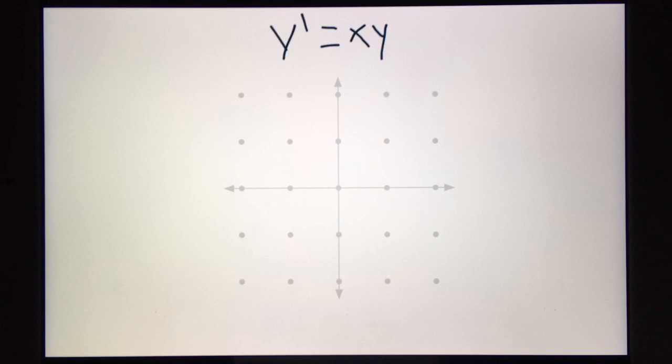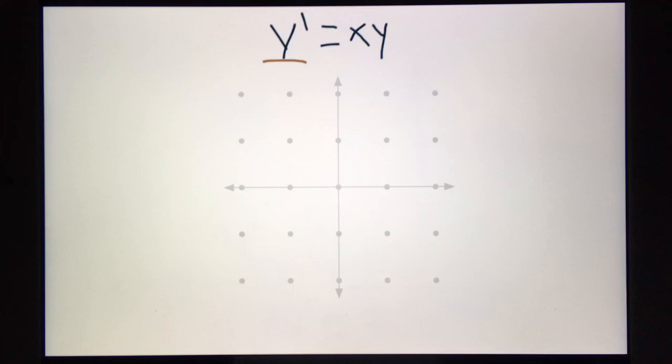So let's take this derivative here, y prime equals x y. This just means that this is the derivative. And so when we design a slope field, we are basically making a field of the slopes at each point. Let me demonstrate. Let's start with an easy point, 0, 0, the origin.